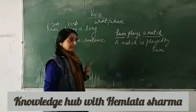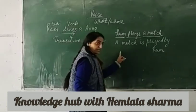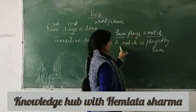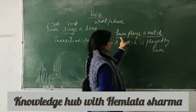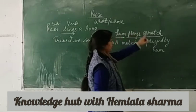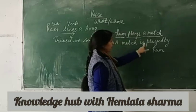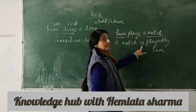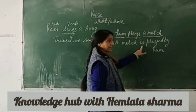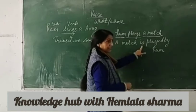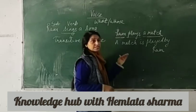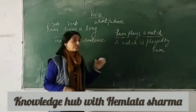A match is played by Ram. What changes do you see? First of all, the object became the subject, and the subject became an object. The main verb is always in the third form. However, a change takes place in the helping verb. Now why this change takes place, we'll explain a little later. But first of all, you have to be clear how we change a sentence from active to passive.